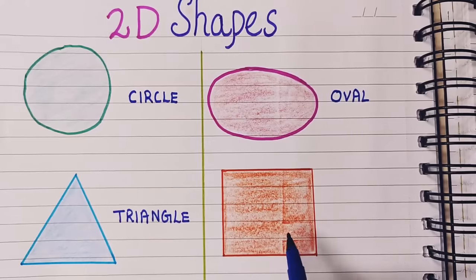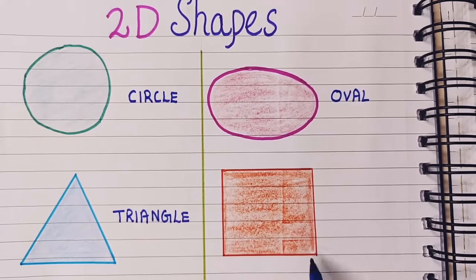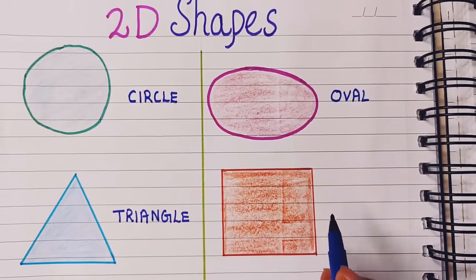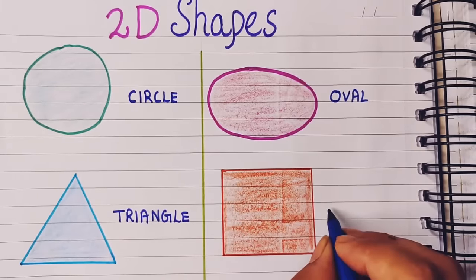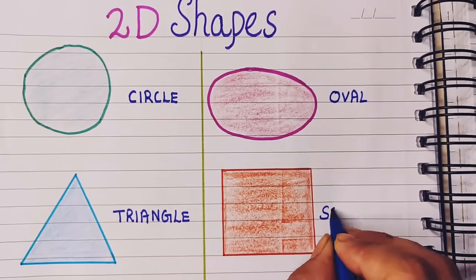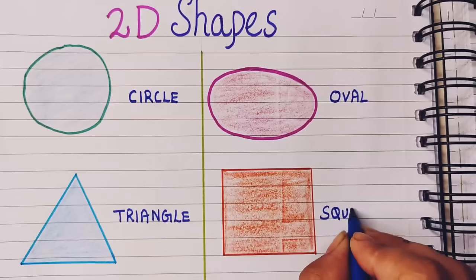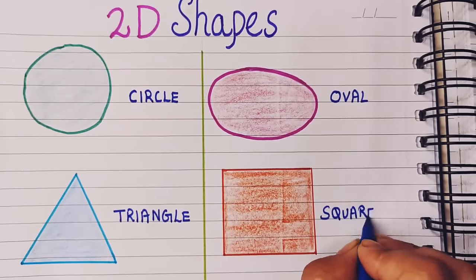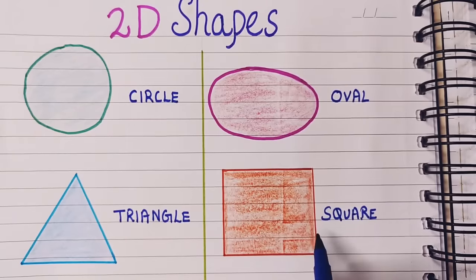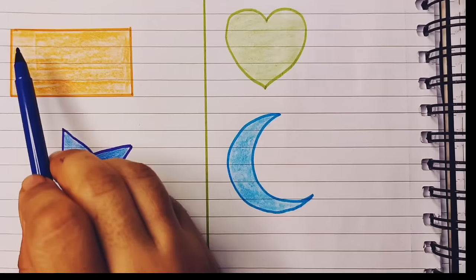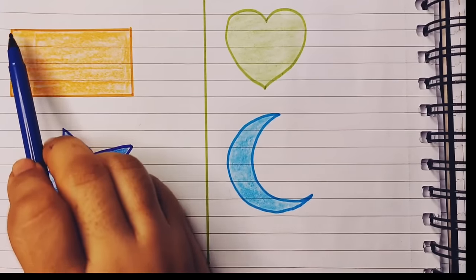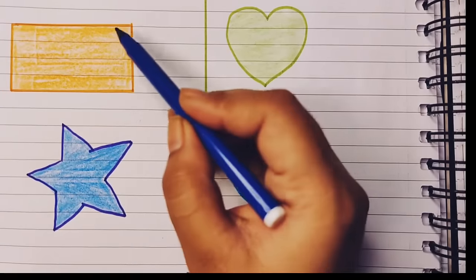The next shape has four sides and four corners, and all the sides are equal. It is a square: S-Q-U-A-R-E, square.